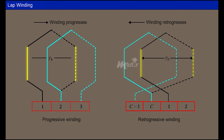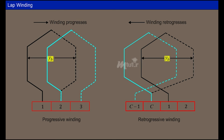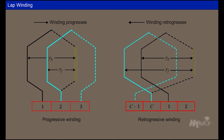The displacement between the sides of a coil measured in terms of armature conductors is called the back pitch Yb. Front pitch Yf is the displacement between the completing side of one coil and the starting side of the successive coil, measured in terms of armature conductors.